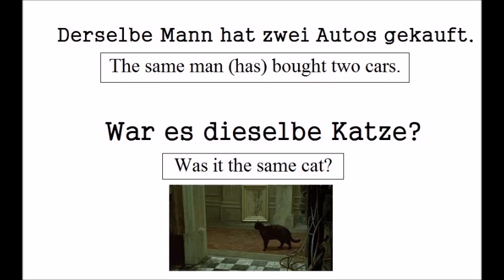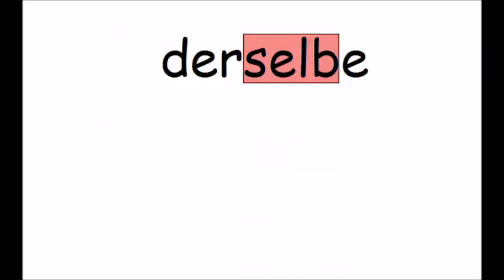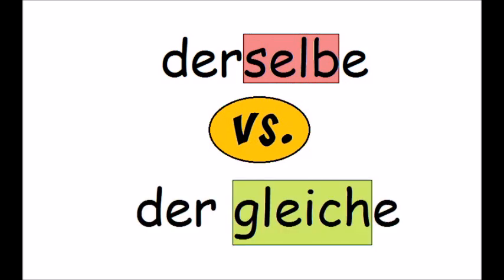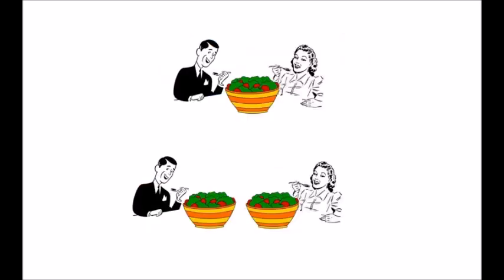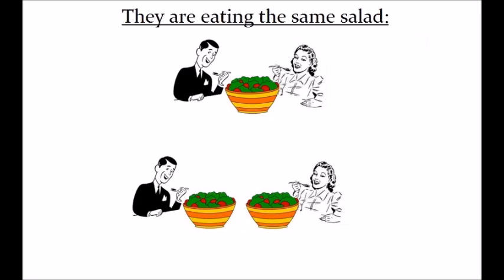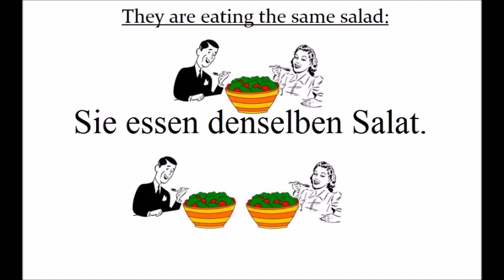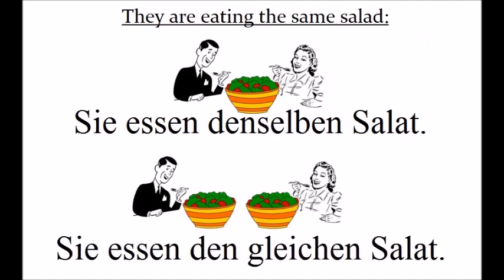If you're not sure about the declination of 'derjenige' and 'derselbe', please watch my tutorial on adjective declination. Here's a helpful tip: 'derselbe' and 'dergleiche' can be confused sometimes. 'Derselbe' means 'the very same' — so exactly the same thing or individual. 'Dergleiche' means a similar thing or look — so the same type of something. Take a look at these pictures: in English they are described by the same sentence, 'they are eating the same salad'. In German however, the first would be 'Sie essen denselben Salat' — so it's one salad and they're both eating it — and the second would be 'Sie essen den gleichen Salat', meaning the type of salad is the same.